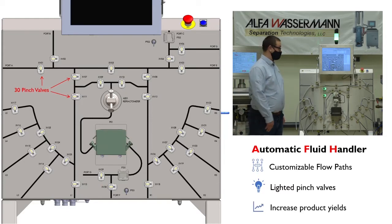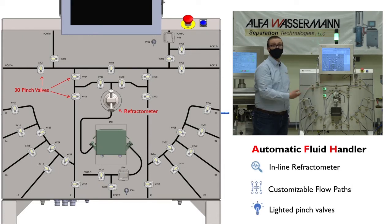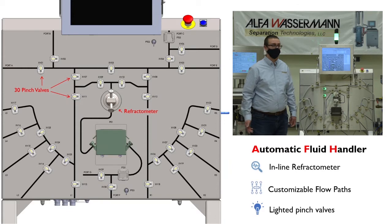For example, one of the most important sensors incorporated into this unit is an inline refractometer that can measure, record, and trigger flow paths depending on BRICS values or refractive indices.